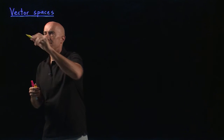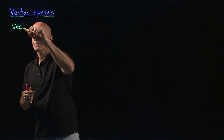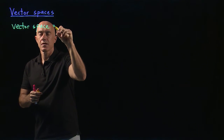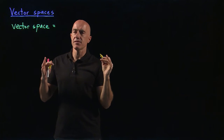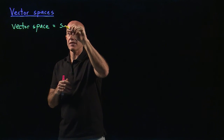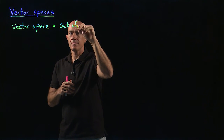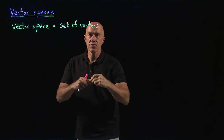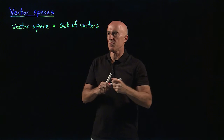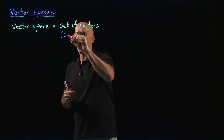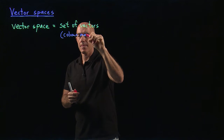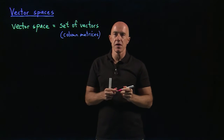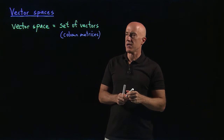A vector space consists of two things. One is a set of vectors. In this course, the vectors will be simply column matrices. But as I mentioned, vectors can be more general than just column matrices.